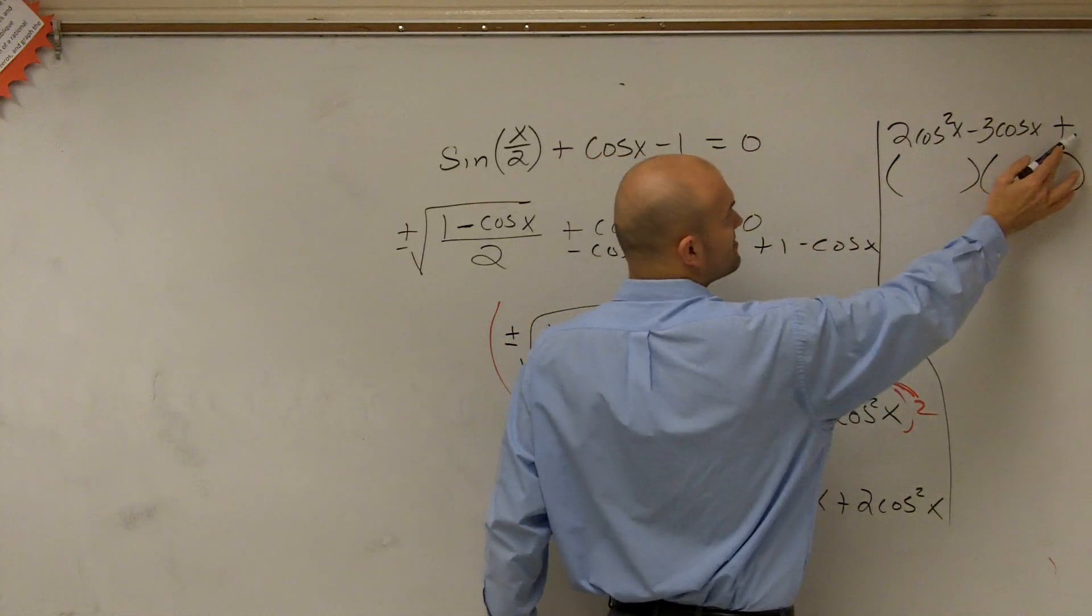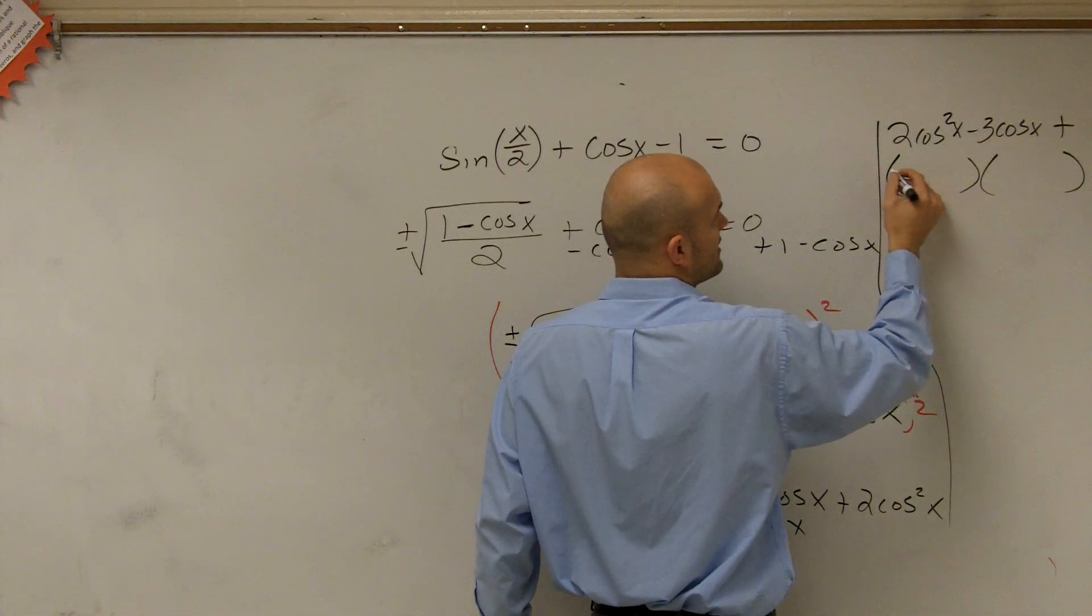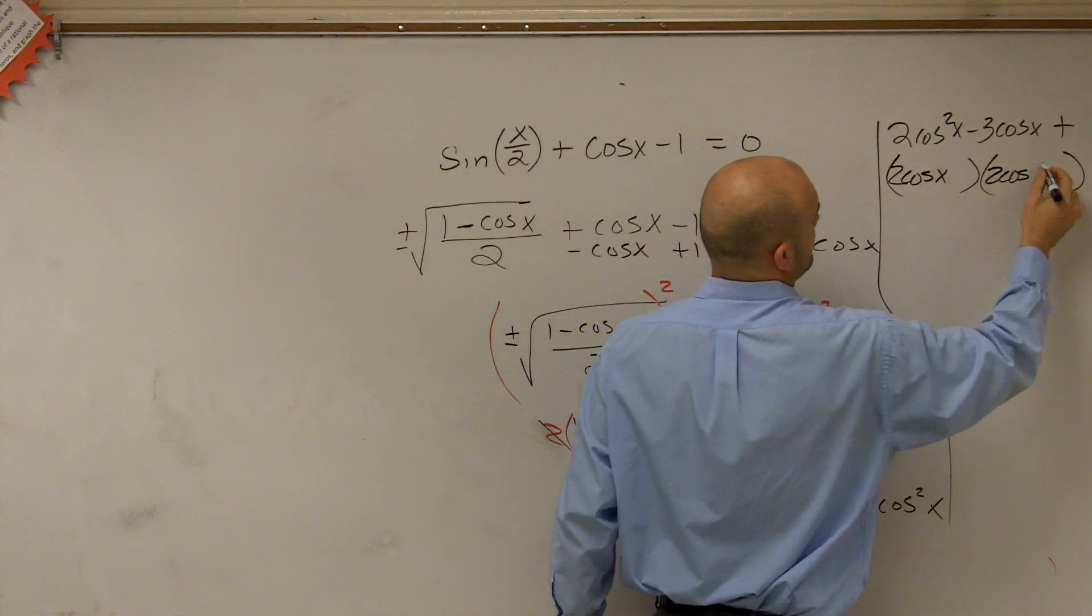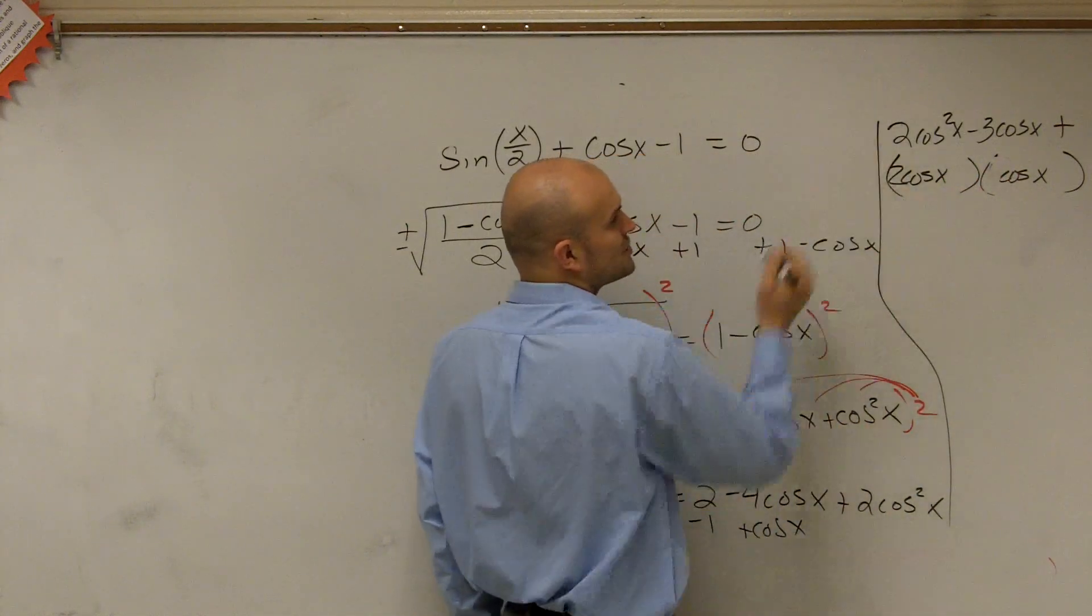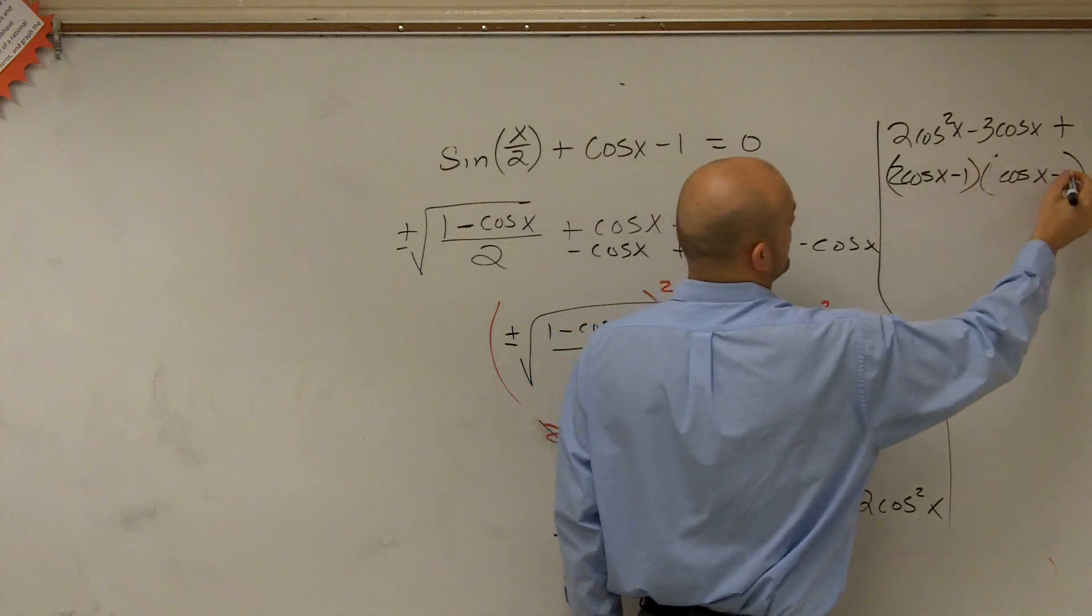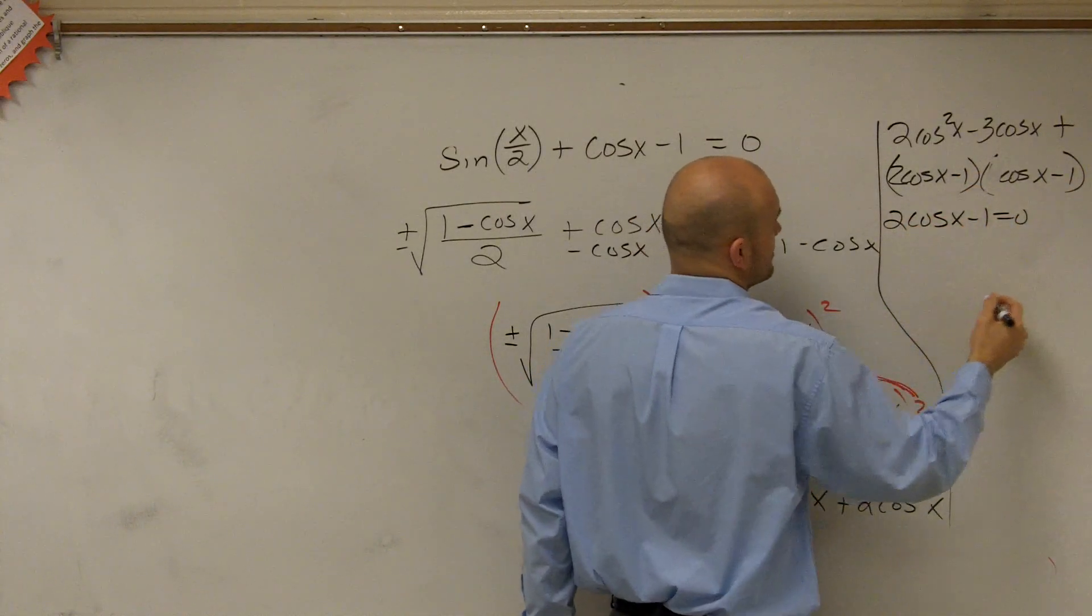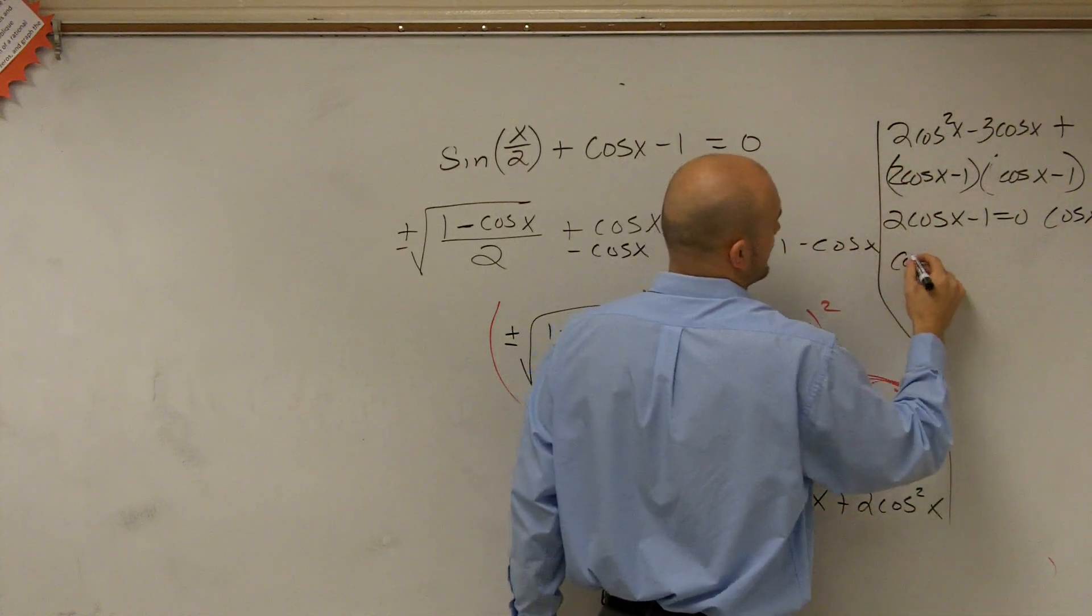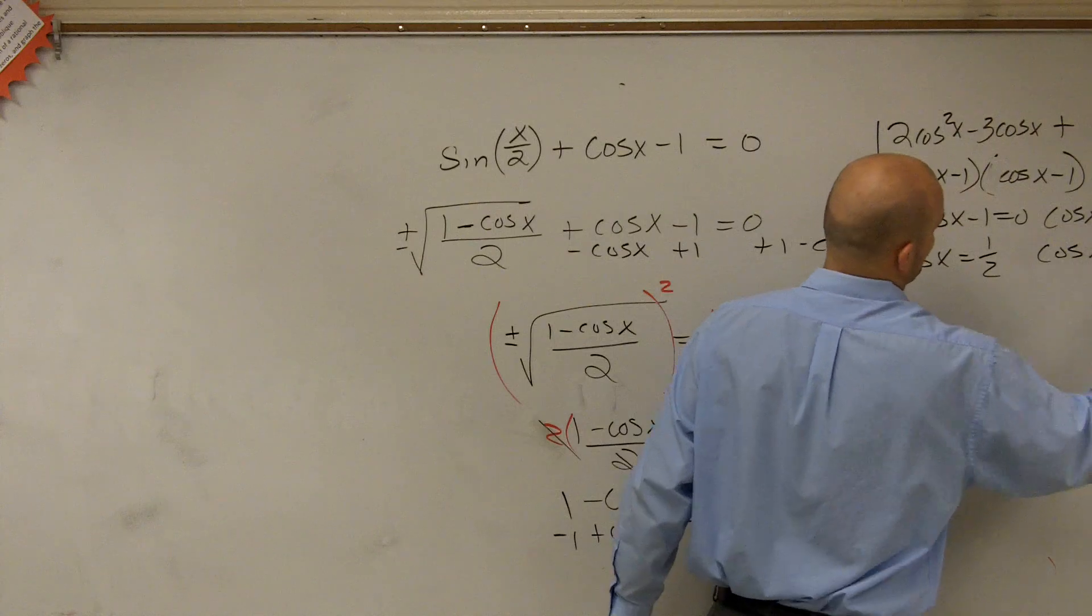Well, I know that my two terms have to multiply to give me 1. But then they're going to add to give me negative 3. So if I create my first two terms, have to multiply to give me 2 cosine squared minus 1 minus 1. Therefore, I have 2 cosine of x minus 1 equals 0, and I have cosine of x minus 1 equals 0. Then I get cosine of x equals positive 1 half, cosine of x equals 1.